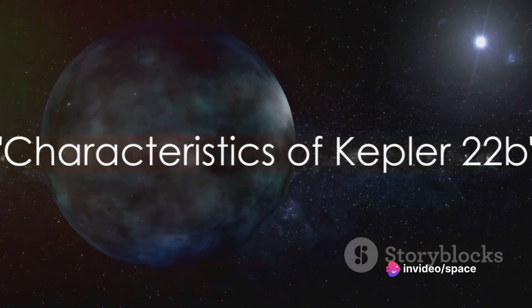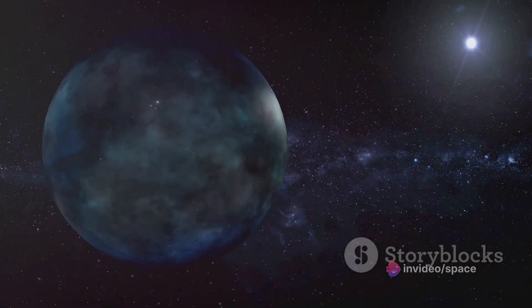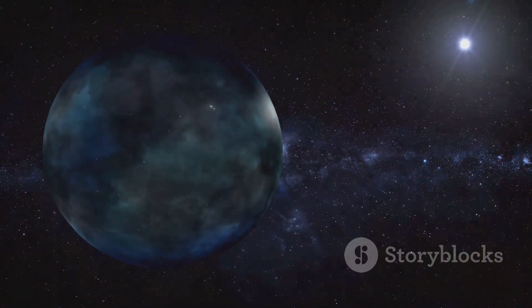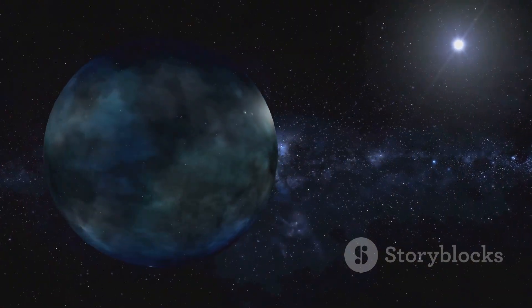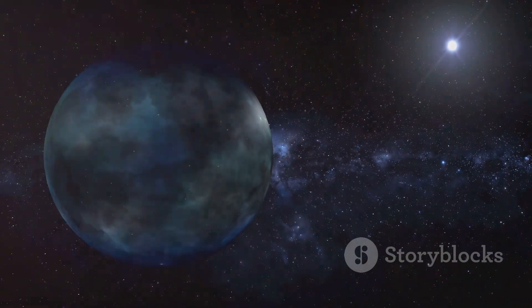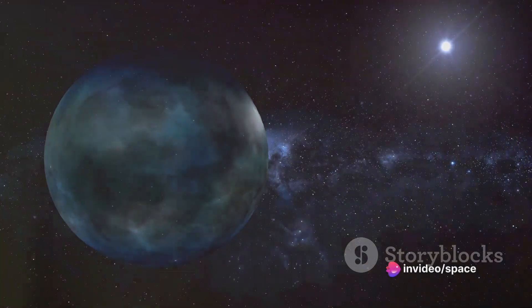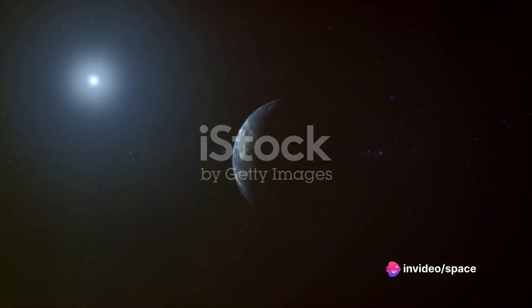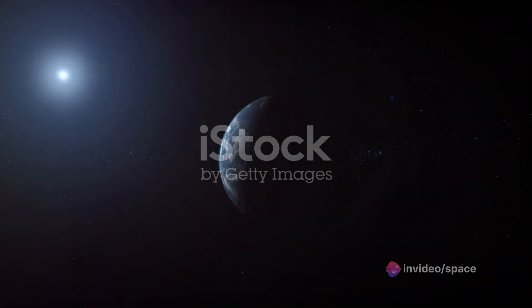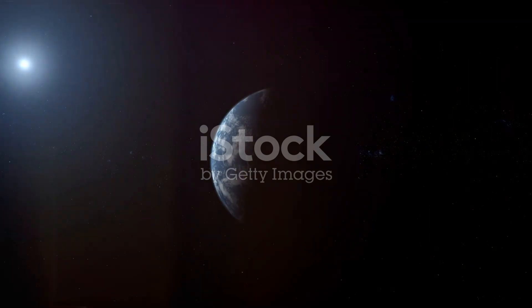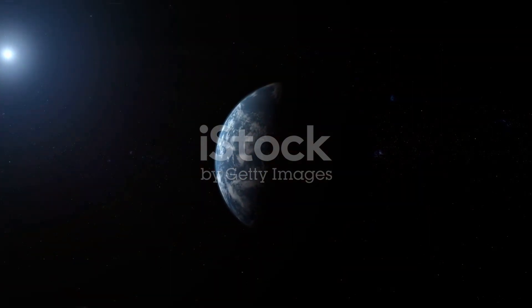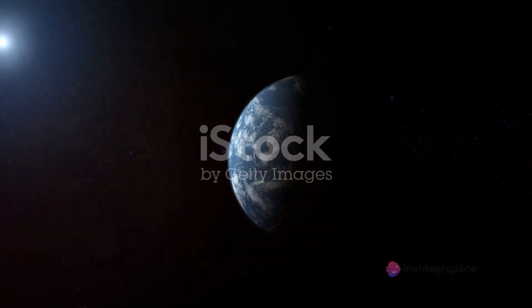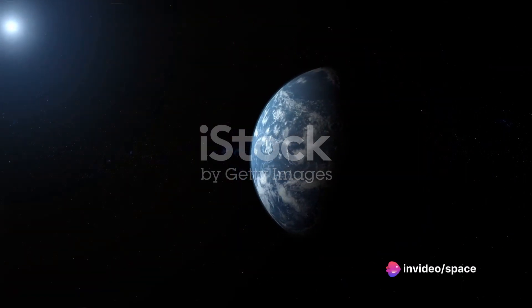Kepler-22b, a super-Earth in the habitable zone. But what makes it so special? Let's delve into the details. Kepler-22b is a planet that's been described as a super-Earth. Now that doesn't mean it's got a cape and is out fighting cosmic crime, it simply means that it's larger than our home planet. In fact, it's about two and a half times the size of Earth. But size isn't everything, it's what's on the inside that counts.